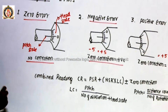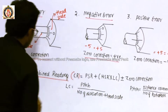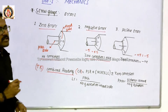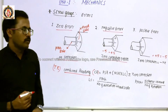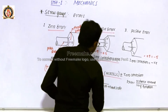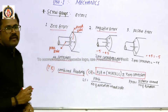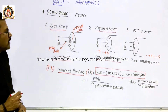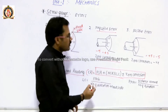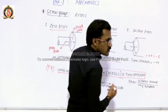Next, combined reading, also known as total reading. The combined reading is also known as total reading, and this measurement is called the total reading. The formula for the combined reading of a screw gauge is: total reading equals PSR plus bracket HSR into LC bracket, plus or minus zero correction.